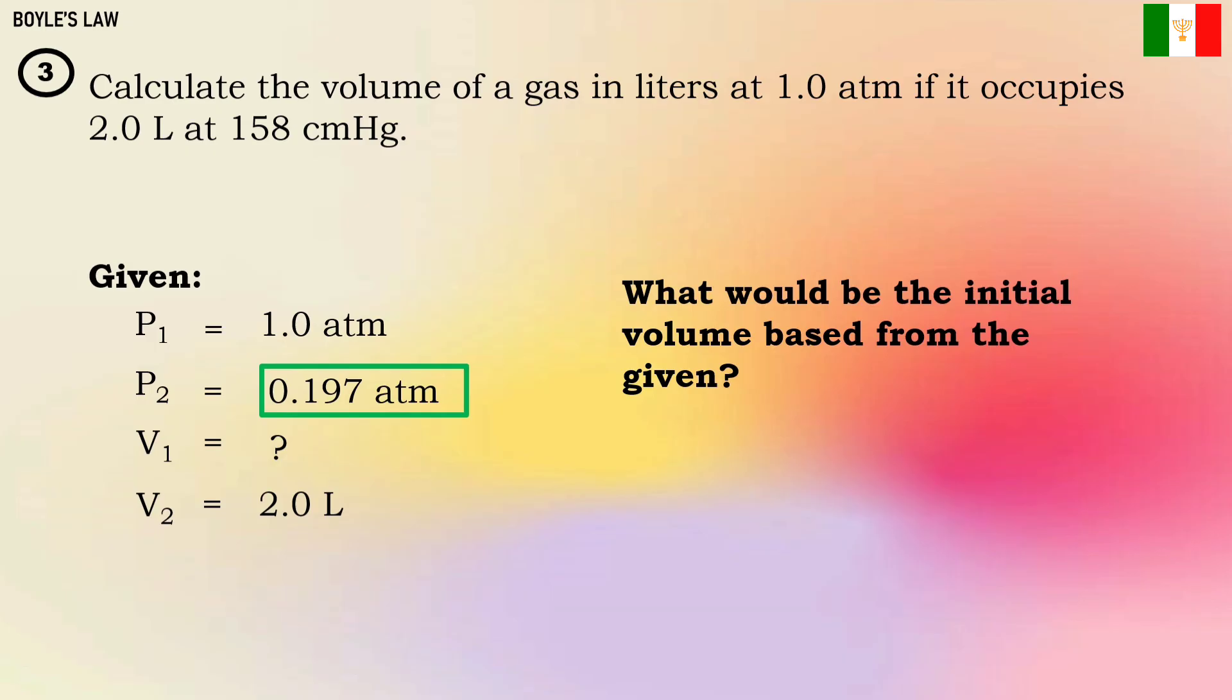What would be the initial volume based from the given? So what do you think is the result we expect? If you notice, the pressure decreased. So the volume we expect should be increasing. Let's proceed to the formula to find out. The formula we'll use is V₁ = P₂V₂/P₁.